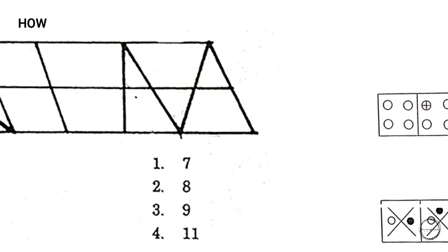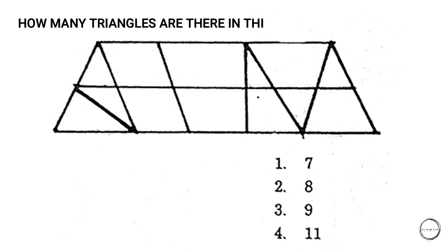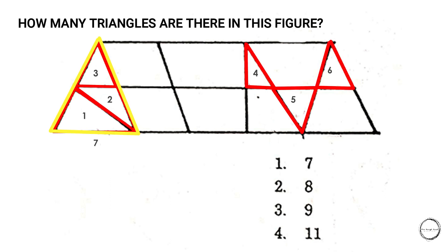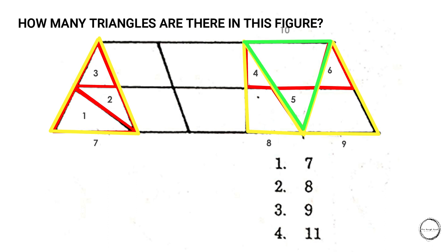Next: how many triangles are there in this figure? Let's count together — one, two, three, four, five, six, then the bigger triangle: seven, eight, nine, ten, and one more triangle if you could find it — the 11th triangle is the last one.